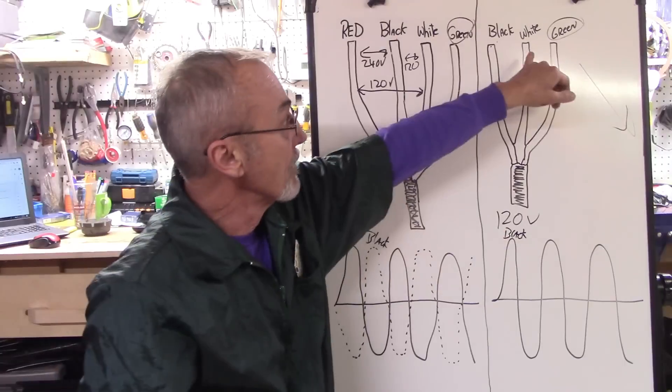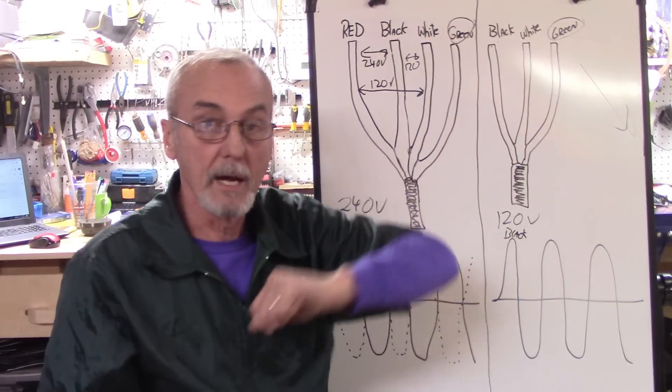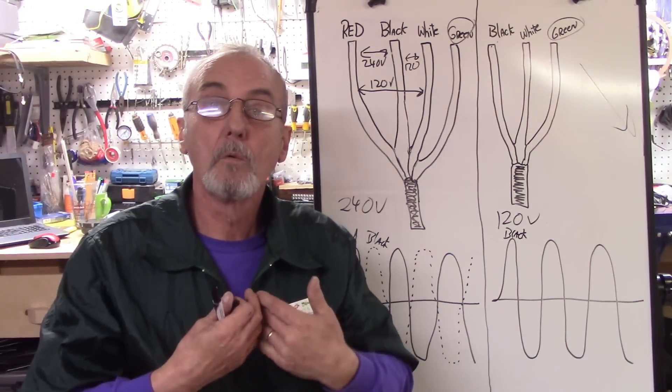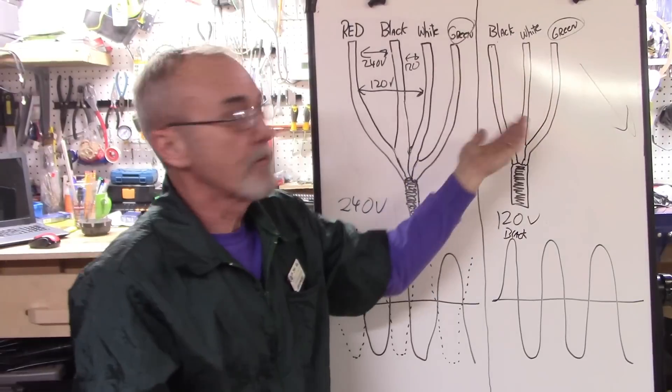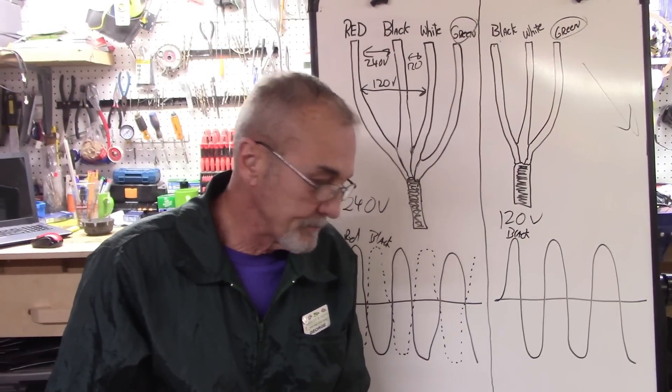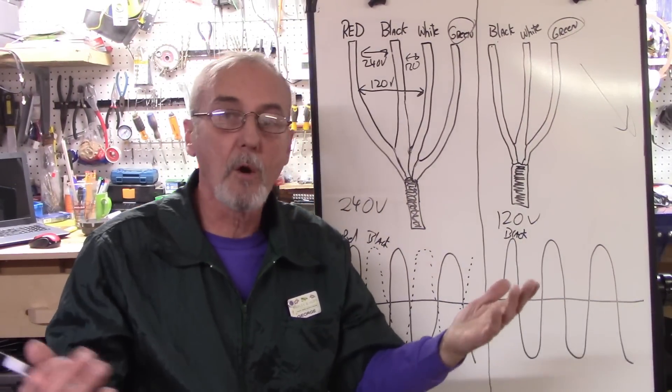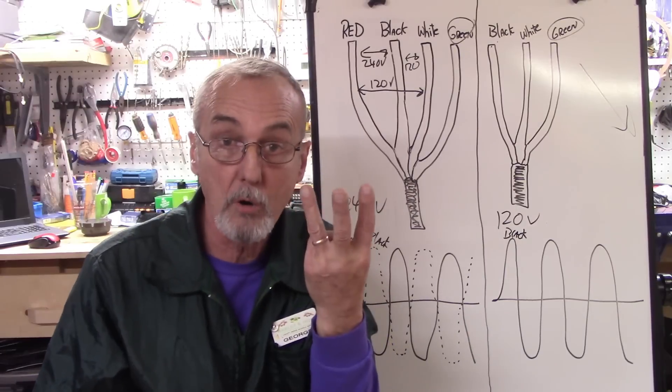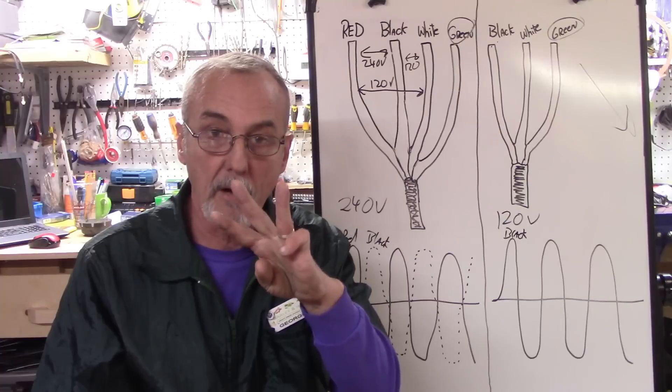Now you have 240 volts between these two lines instead of 120. And that would be for appliances that, as an example, there are some dryers out there. You've got a three-prong dryer. That's a hot, a hot, and a ground.